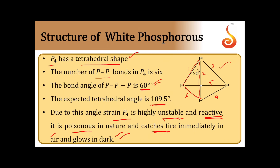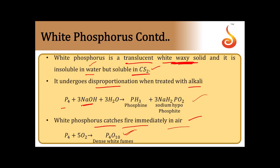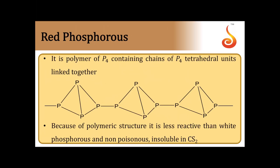White phosphorus is a translucent white waxy solid, soluble in carbon disulfide but insoluble in water. It undergoes disproportionation with sodium hydroxide. White phosphorus catches fire immediately when exposed to air, forming P4O10 as dense white fumes — this is because of the bond angle strain that makes it highly reactive.